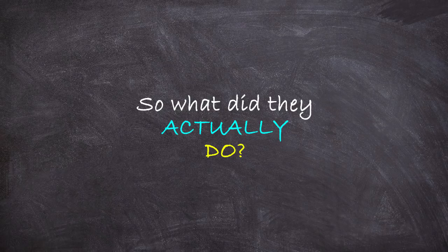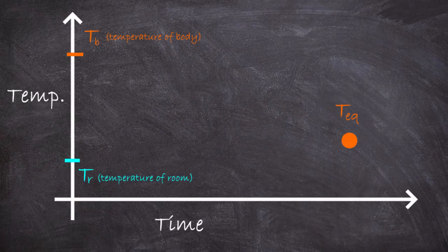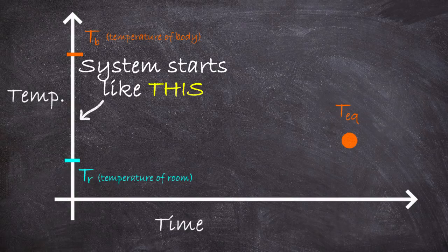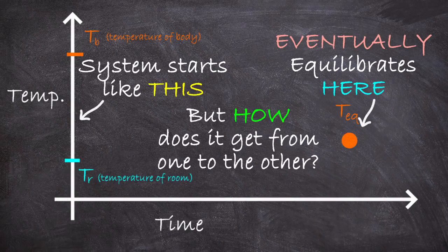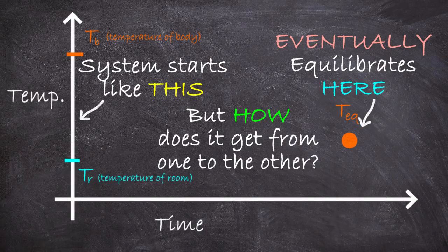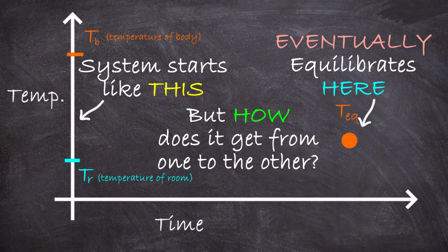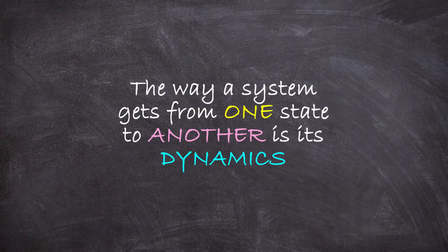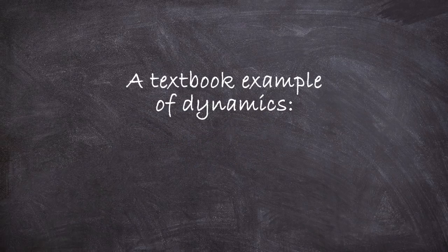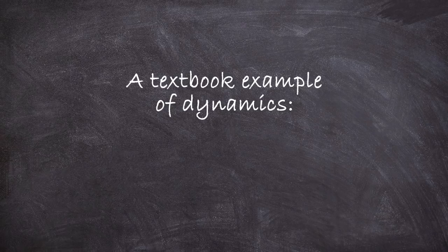Well, at the heart of it, what they do is exploit the specific way in which a system like this achieves equilibrium in time. In other words, they're exploiting the dynamics of how the system gets from its initial non-equilibrium state to its final equilibrium state. And the type of dynamics they exploit actually relates to some very basic physics that will be covered in any introductory physics class: that of a so-called damped harmonic oscillator.